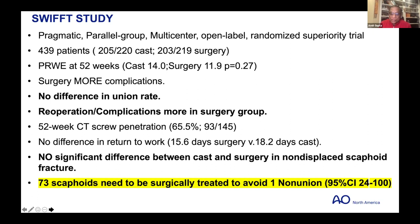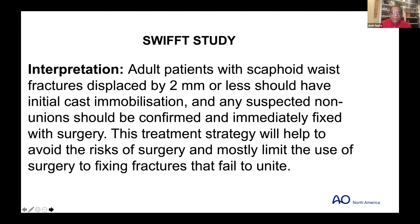Their conclusion was that 73 scaphoids need to be surgically treated to avoid one non-union, with a 95% confidence interval of 24 to 100. Adult patients with scaphoid waist fractures displaced by 2 mm or less should have initial cast immobilization. Any suspected non-union should be confirmed and immediately fixed with surgery, helping to avoid the risk of surgery and limit it to fixing fractures that fail to unite.